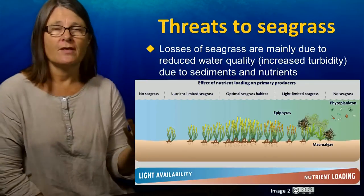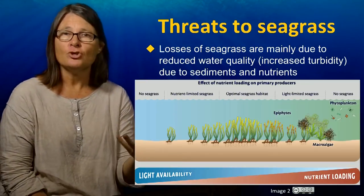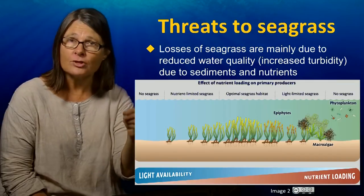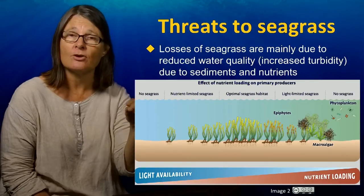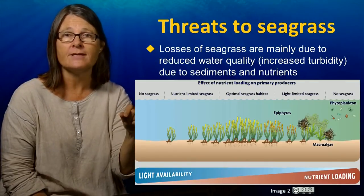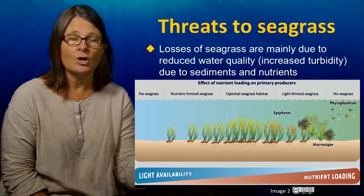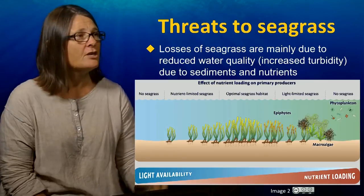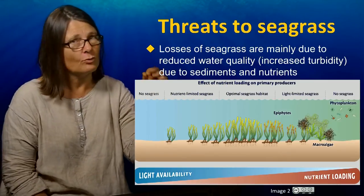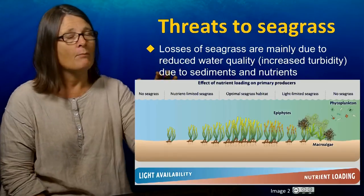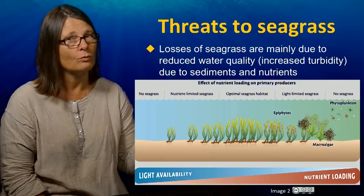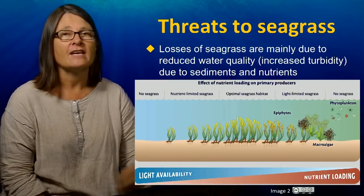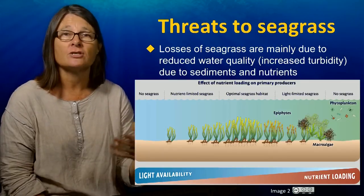Sediments reduce the light level reaching the benthos, but nutrients can also reduce light. They do this by allowing the growth of algae on the surface of seagrass leaves, increasing the abundance of those epiphytes seen in previous slides, and by enhancing the growth of phytoplankton — the very small plants suspended in the water column. By increasing algal biomass and phytoplankton, light to the seagrasses is reduced and they can no longer do sufficient photosynthesis to support their growth.